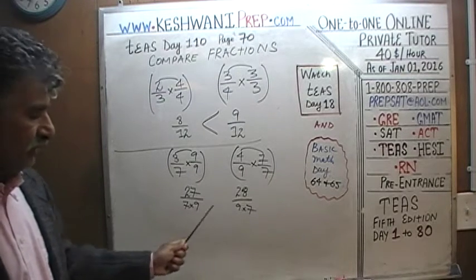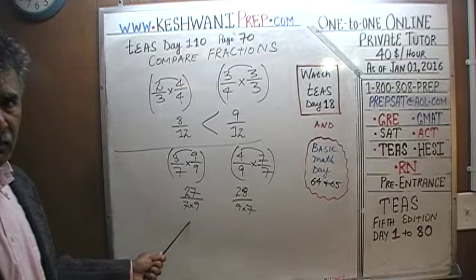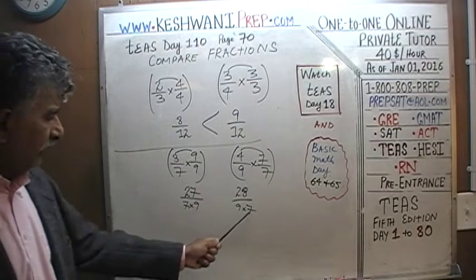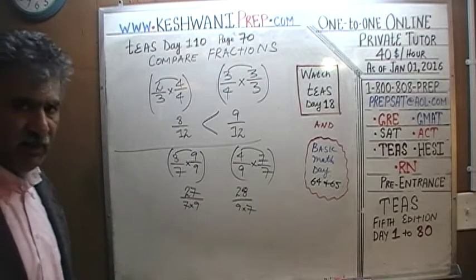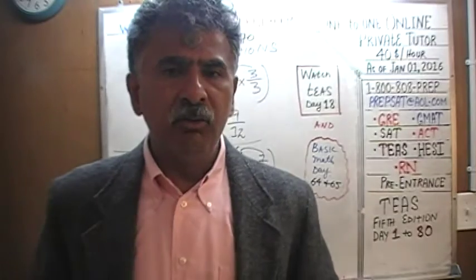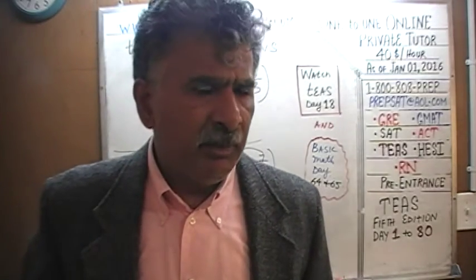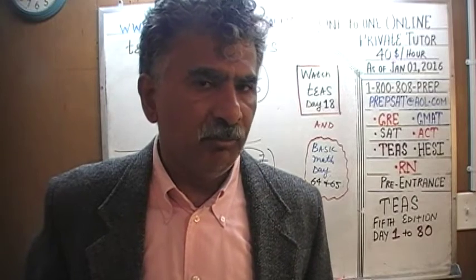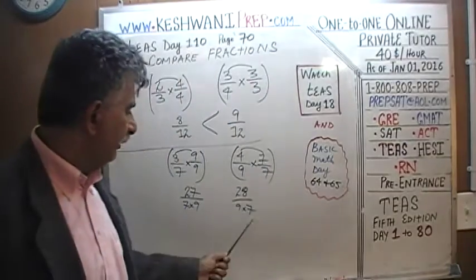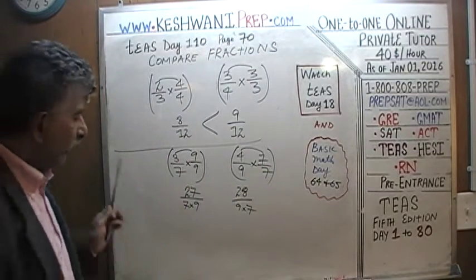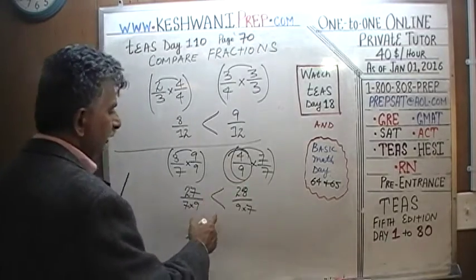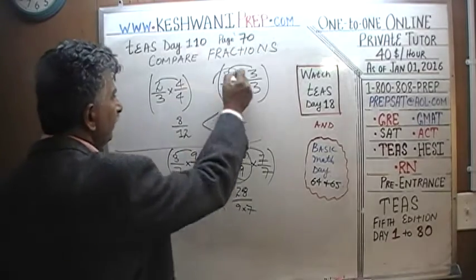We actually don't need to figure out what nine times seven is — we just need to establish that they have the same denominator. As long as the denominator is common, all we have to do is compare the numerators. Twenty-eight is bigger than twenty-seven, therefore four-ninths is bigger than three-sevenths.